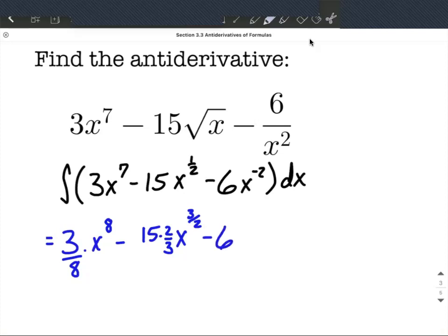Minus, the 6 comes along. We're going to increase the exponent by 1, so negative 2 plus 1 makes negative 1. And then we divide by that new exponent. For good measure, we put a plus c at the end, indicating any constant can be added to this.